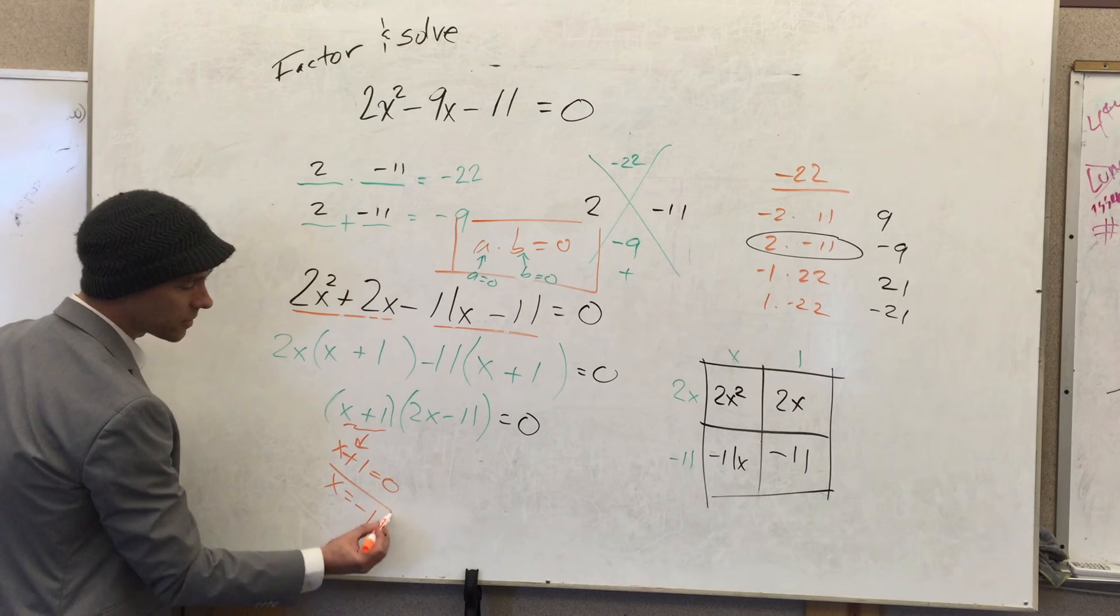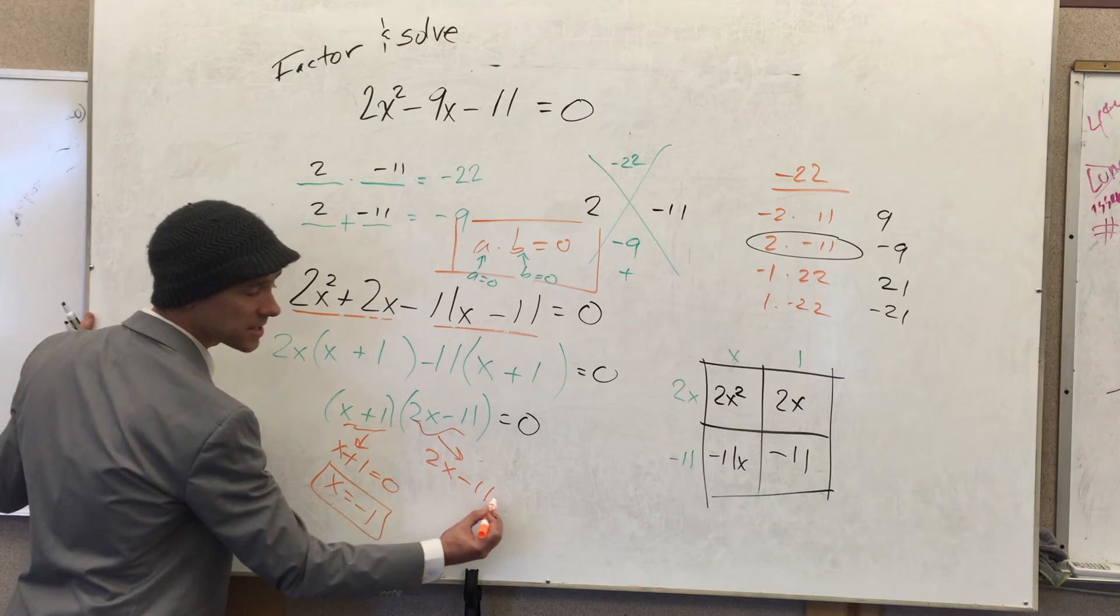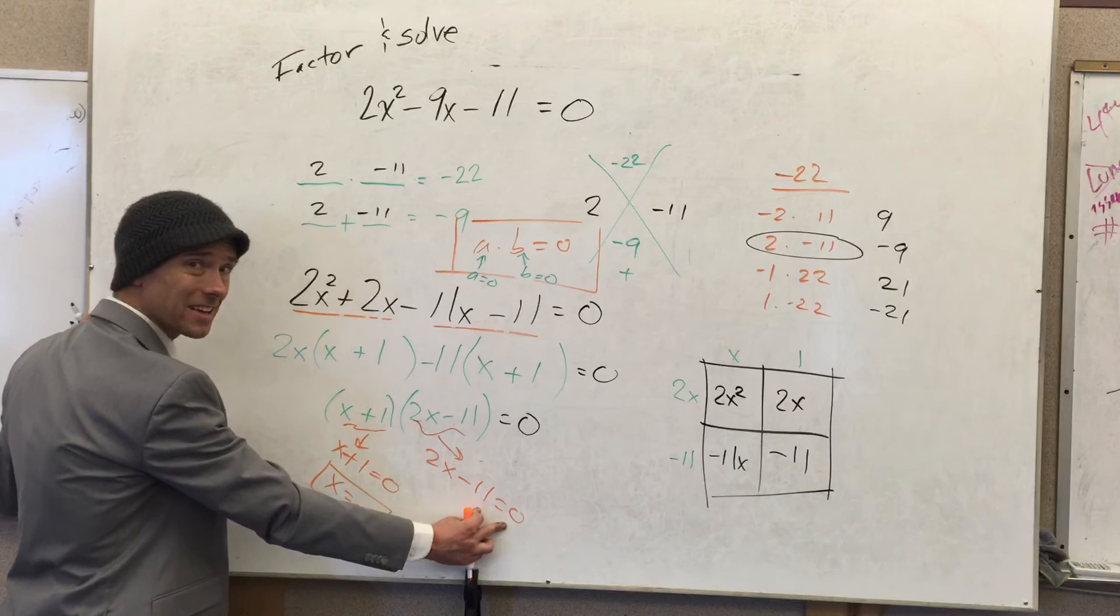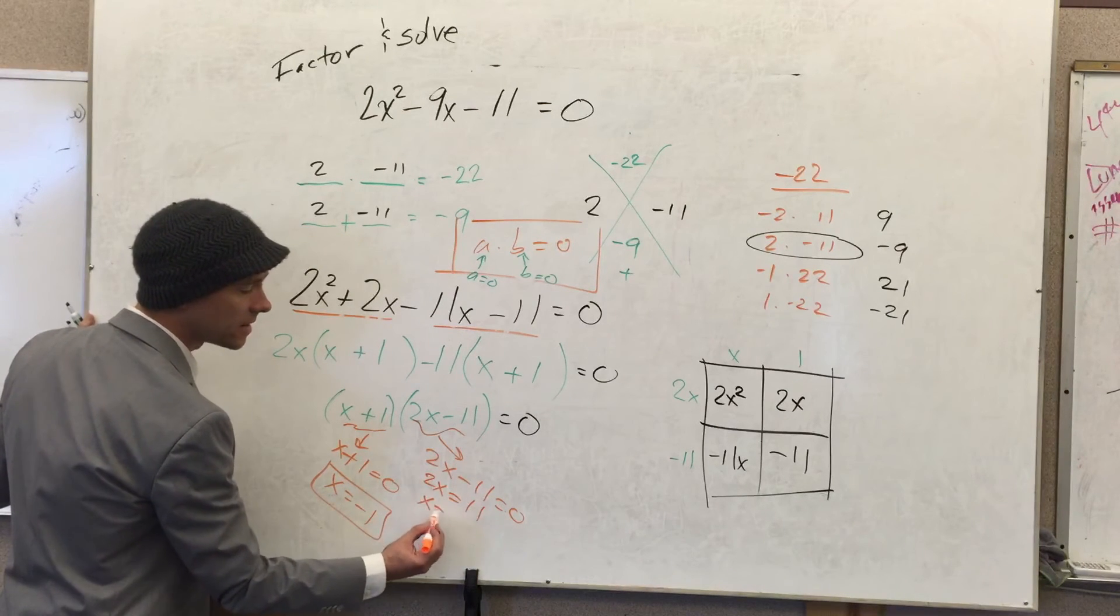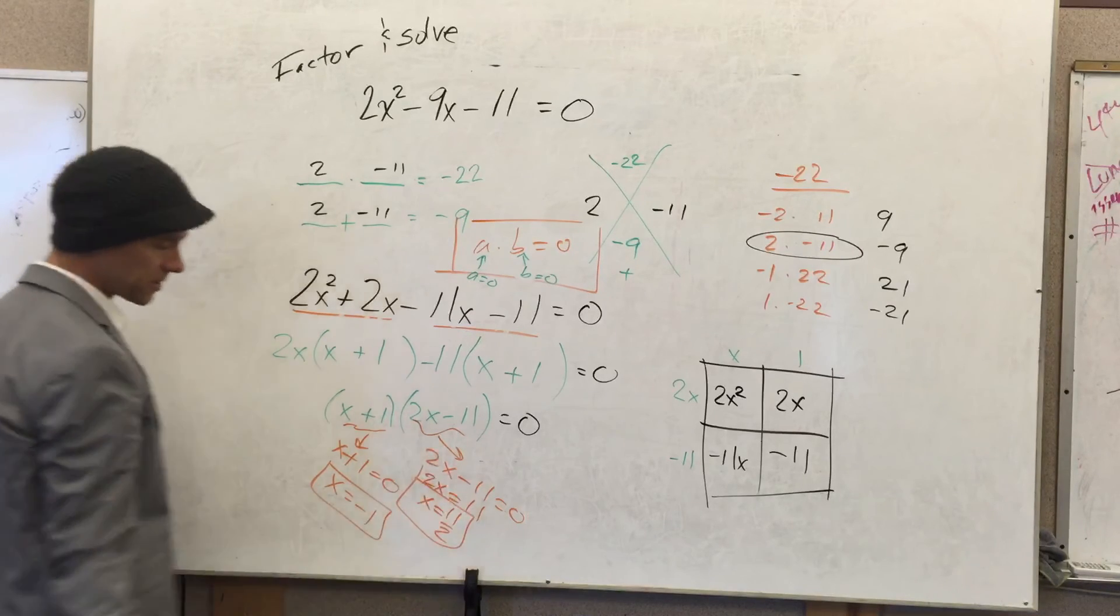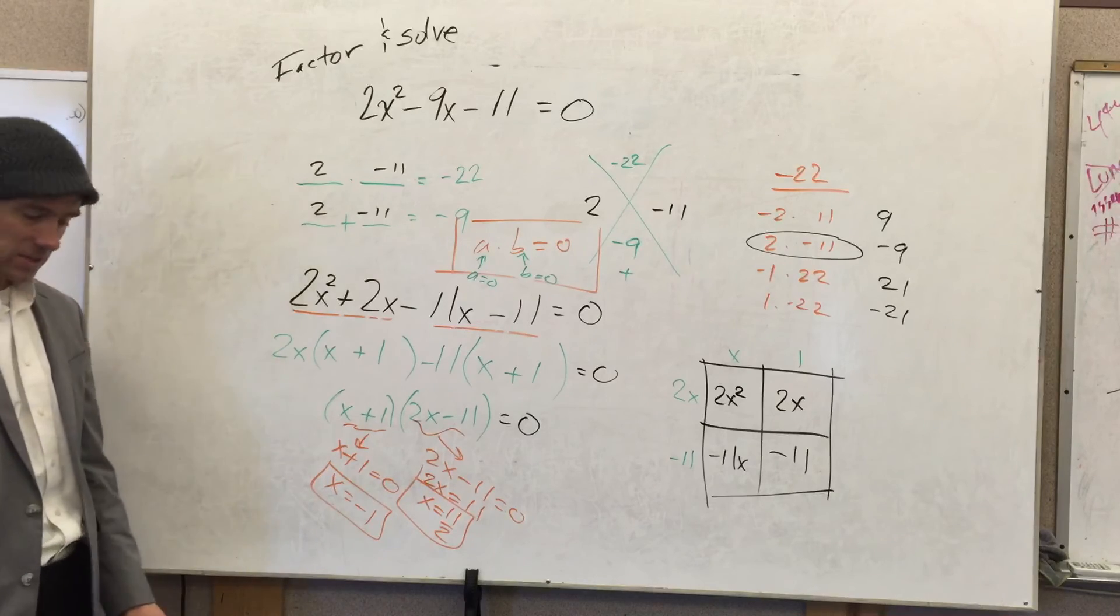This is analogous: this binomial times that binomial. X plus 1 is equal to zero, so x is equal to negative 1. And over here we get 2x minus 11 is equal to zero. We need to add 11 to both sides: 2x is equal to positive 11, and then divide by 2. So our answers are negative 1 and 11 divided by 2.